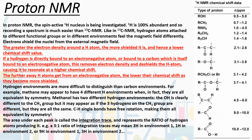Like in carbon-13 NMR, the hydrogen atoms attached to different functional groups or in different environments are going to feel the external magnetic field differently. Electrons shield nuclei from the external magnetic field. We have an induced magnetic field due to electrons circulating, which goes in the opposite direction to the external magnetic field. Therefore, electrons shield the nuclei from the external magnetic field, and so it feels slightly less than the total value of that magnetic field.